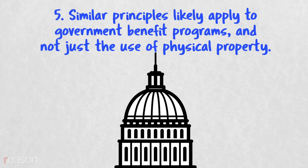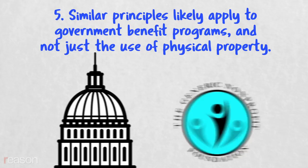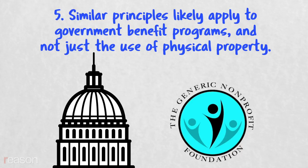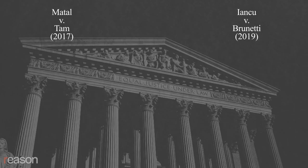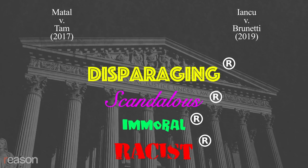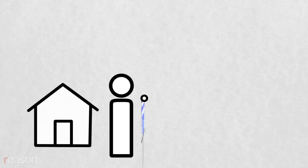Rule 5. Similar principles likely apply to government benefit programs, and not just the provision of real estate or money. Charitable tax exemptions, for instance, are likely a form of limited public forum. The government can discriminate based on content — you can't use tax-deductible donations to support or oppose candidates for office — but not based on viewpoint. Likewise, the Supreme Court held that the government can't deny full trademark protection to trademarks that are seen as disparaging, scandalous, immoral, or racist. Such restrictions, the court said, were impermissibly viewpoint-based.